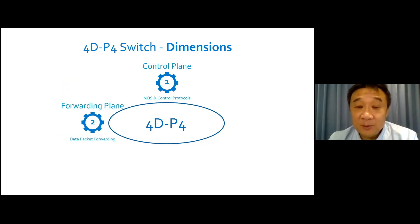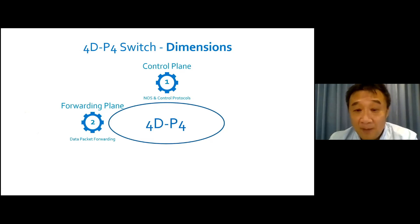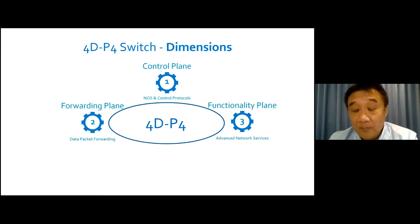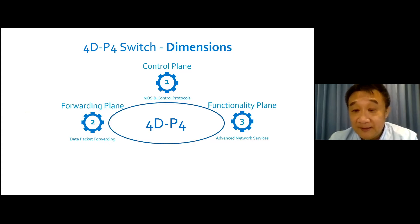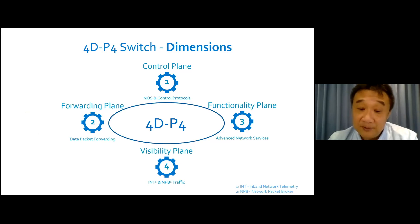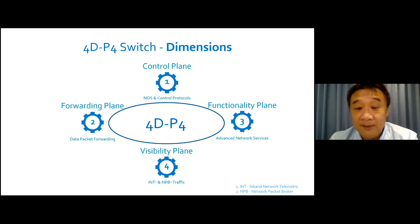The first two dimensions of the switch are the control plane and the forwarding plane, which are similar to most of the white box switches on the market today. However, what makes our switch interesting is the third dimension of the functionality plane, which is designed to run advanced network services. And also the fourth dimension of the visibility plane, specifically designed to carry INT and MPP traffic.